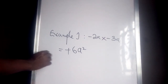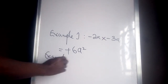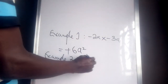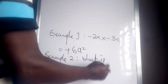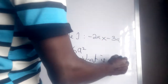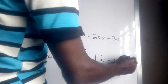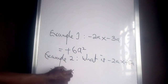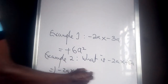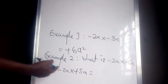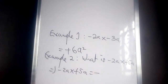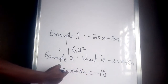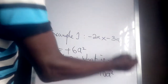Example two: what is minus 2a times 5a? That is minus 2a times plus 5a. From our sign operations, minus times plus is minus. Then two times five is ten, and a times a is a squared. So the answer is minus 10a squared.